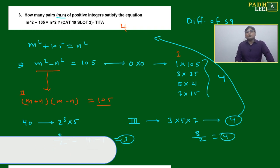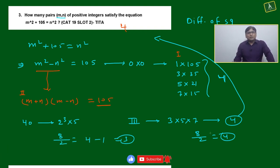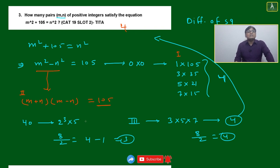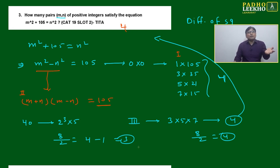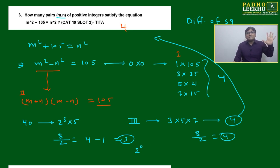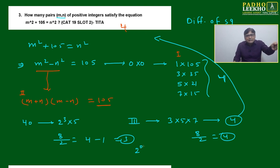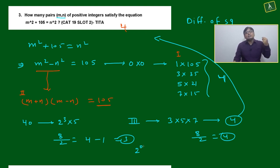Why do we subtract one for even numbers? Simple: because when the number is even, you can only write it as even×even, not odd×odd. So 1 (which is odd×odd) is out of scope — that common sense we apply. For 40, the factors start with powers of 2. You have three powers of two (2¹, 2², 2³), so you can select none, one, two, or all three — giving four ways total.